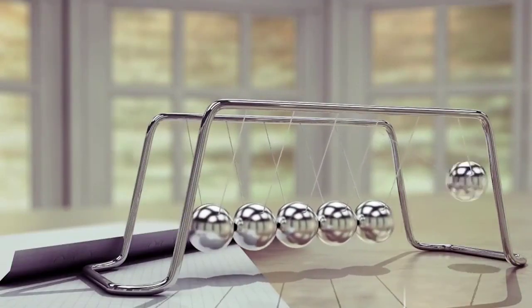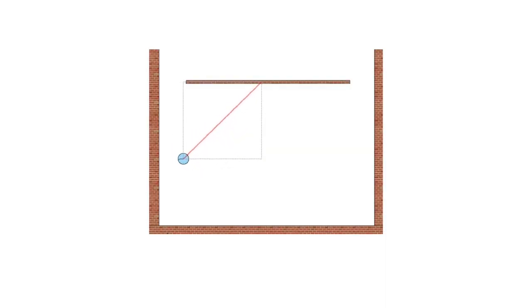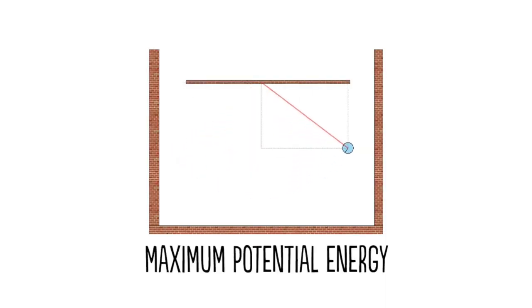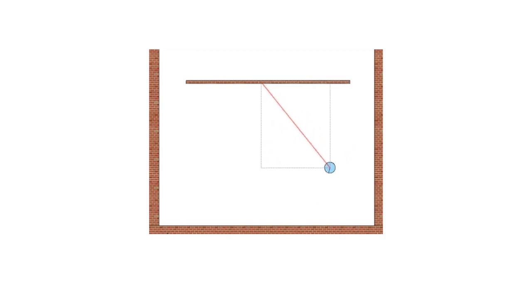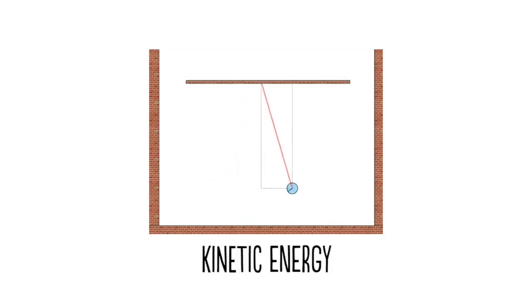When the weight is at its highest, it has maximum stored energy, or potential energy. When it accelerates down to its lowest point, the potential energy is converted to kinetic energy, or the energy of movement.